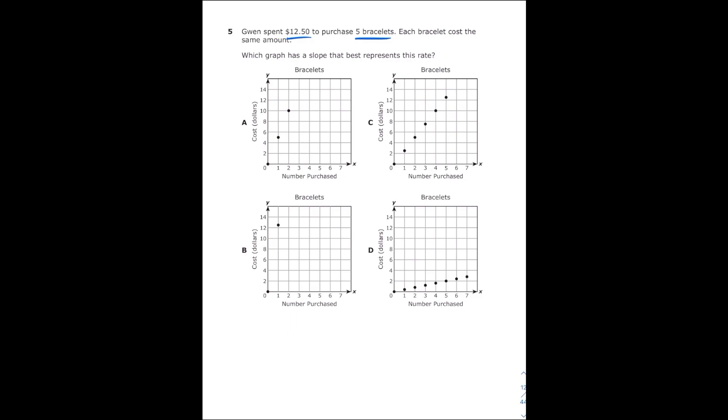So for letter A whenever I go to five bracelets purchased and go up to 12 I see that that's not a point on the graph. For letter C whenever I go to five bracelets purchased and go up there is a point about where $12.50 should be so I'm thinking that's probably it. For letter B obviously there's not a point for five bracelets purchased so that's not going to be it either. And then for letter D whenever I go to five bracelets purchased it's only costing about two dollars which is obviously way off so my answer is going to have to be letter C.